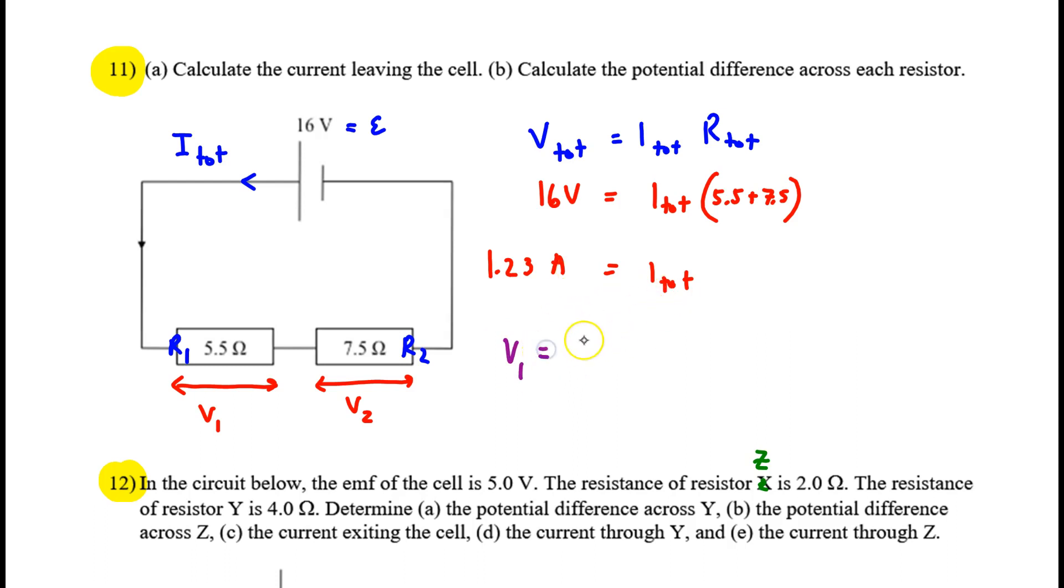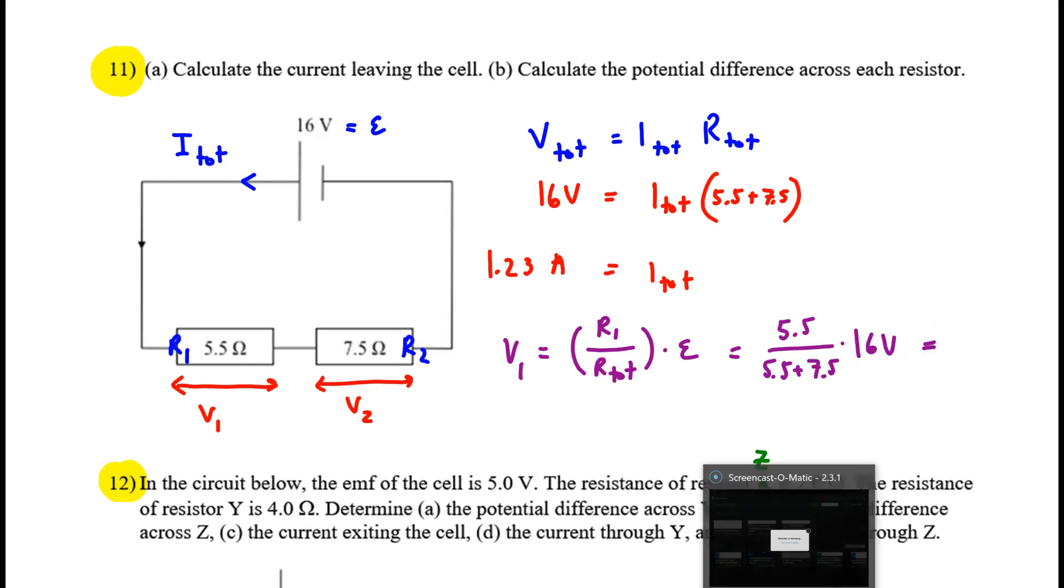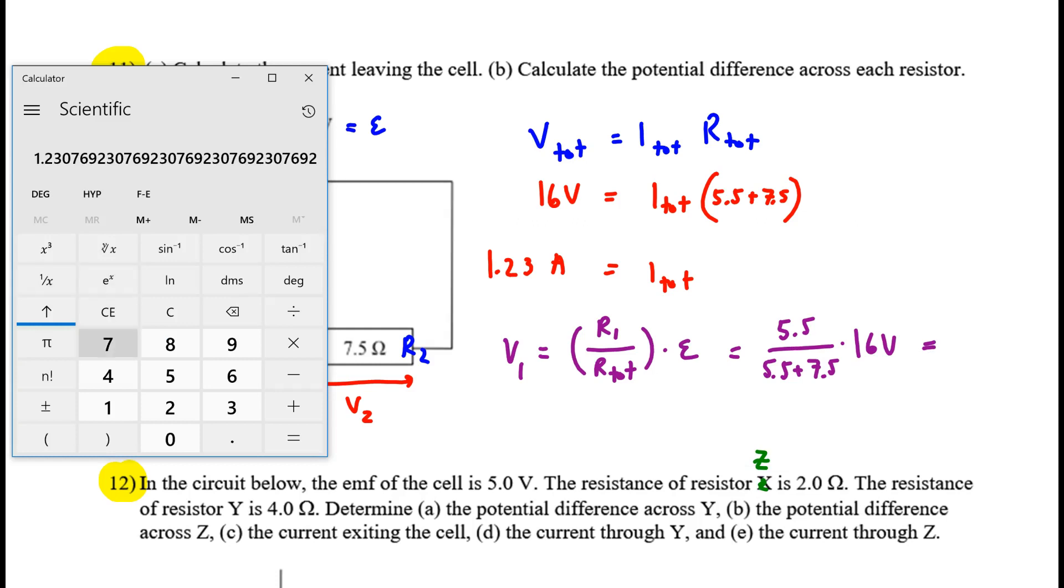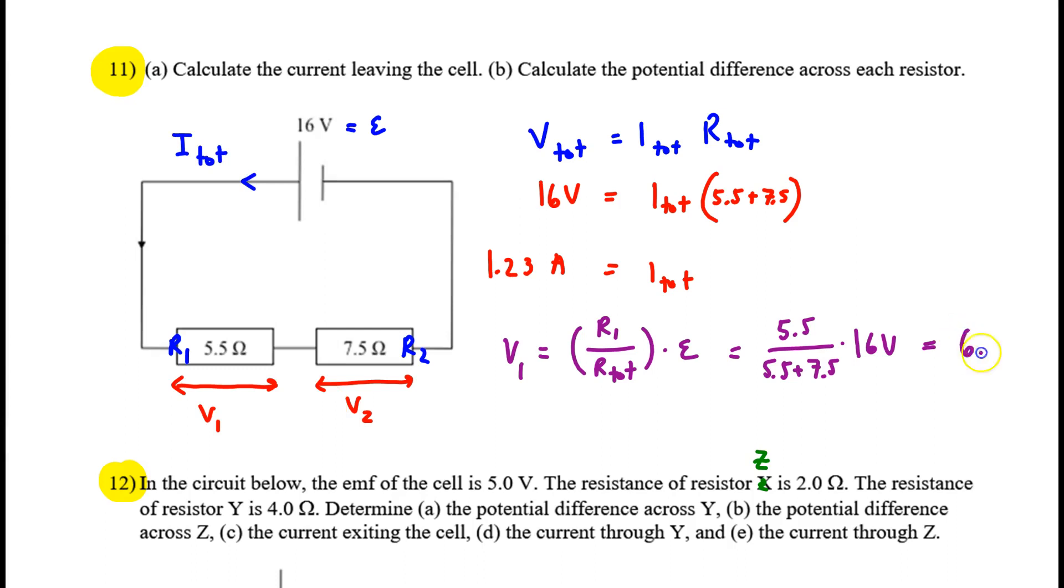V1 consumes some fraction of the EMF. What's the fraction? It's simply the relative resistance. The EMF is 16 volts. And the relative resistance is 5.5 over the total, which is 13. But I'll write that as 5.5 plus 7.5. When we work this out, we do 5.5 over 13 times 16. That's 6.8 for two sig figs.